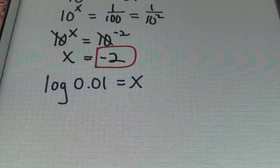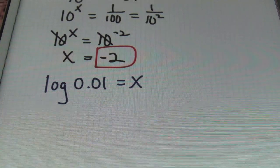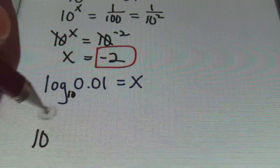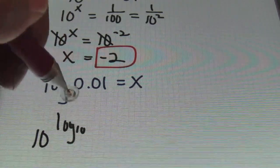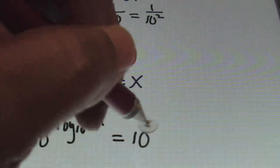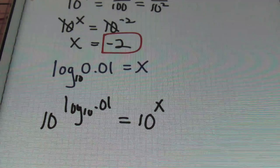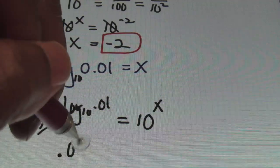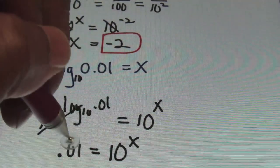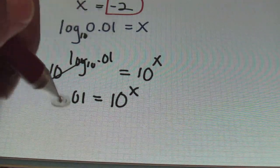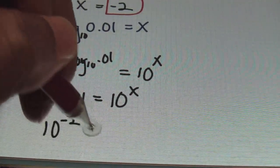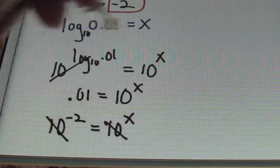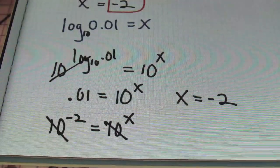Another way of going about this is to exponentialize it. I know my base is 10, so I can say 10 to the log base 10 of 1/100 equals 10 to the x. The 10 and that log base 10 cancel out, bringing down 1/100 which equals 10 to the x. From there, 1/100 is 10 to the negative 2 power. So I have 10 to the negative 2 equals 10 to the x, the tens cancel, and x equals negative 2.